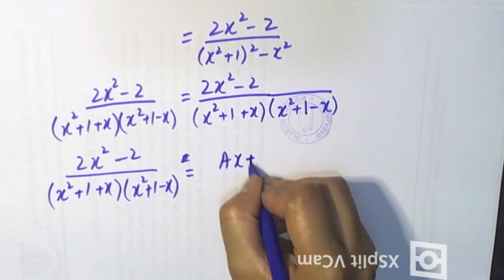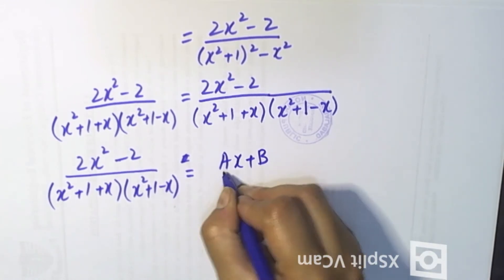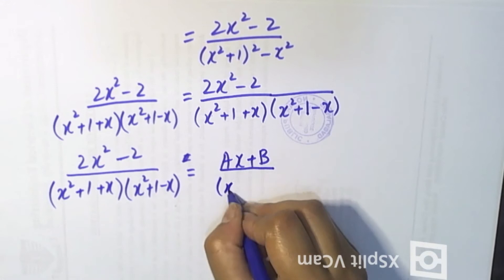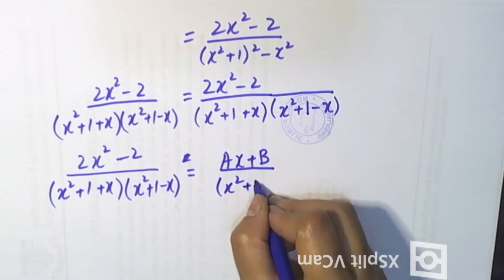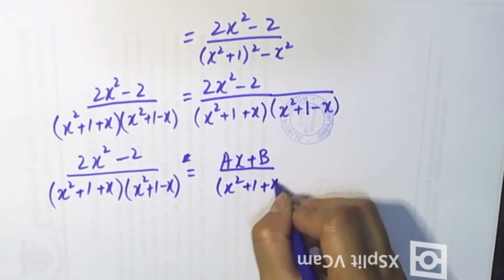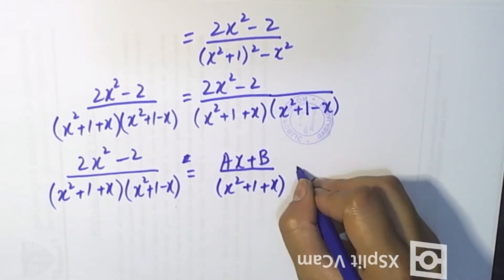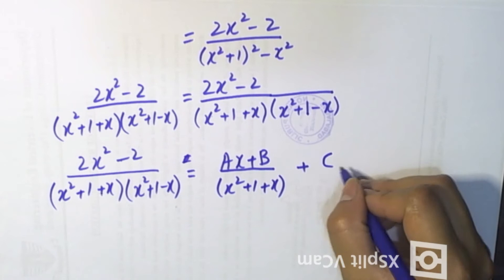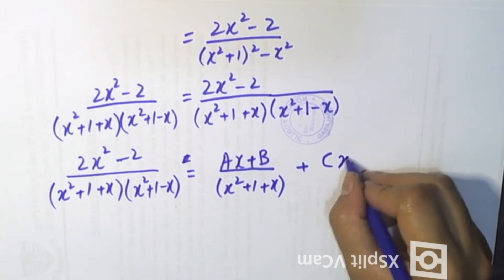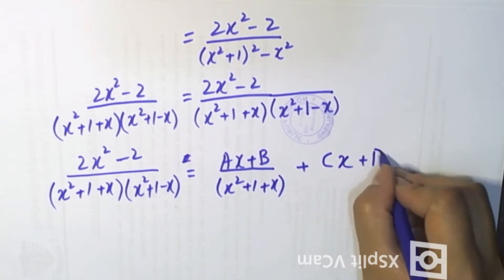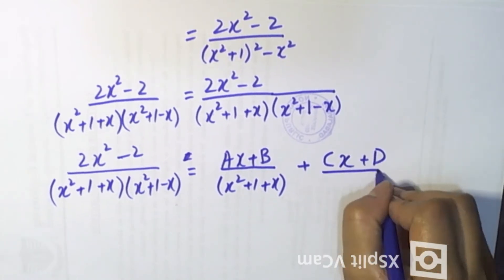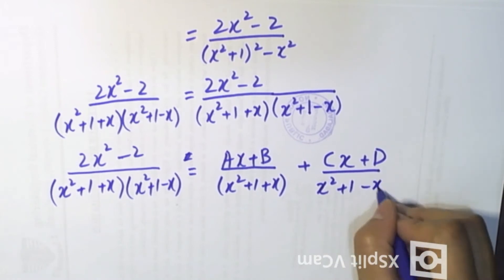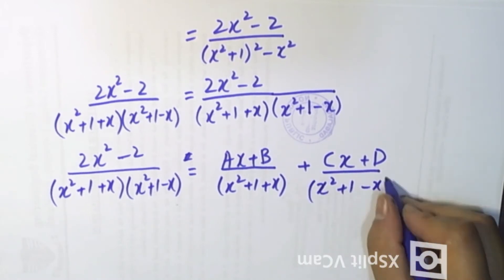We write the partial fraction form as: (AX + B) over (X² + 1 + X) plus (CX + D) over (X² + 1 - X).